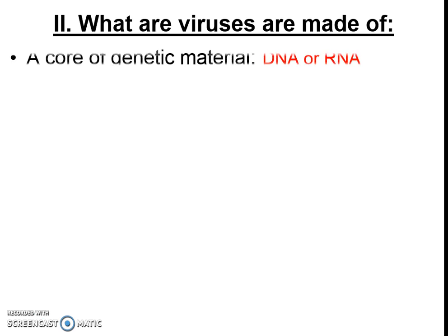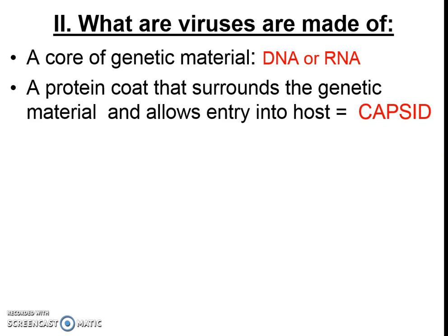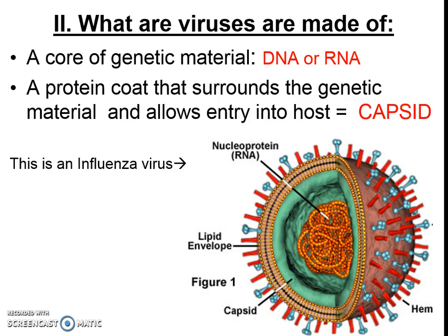What are viruses made of? A virus is going to have genetic material — sometimes DNA, sometimes RNA, sometimes both. They'll have proteins, which is one of our macromolecule categories. The proteins allow the genetic material to be able to enter the cell. That part is called a capsid. The capsid is often the outer part, with proteins around the outside that help it stick and match up to get into another cell.